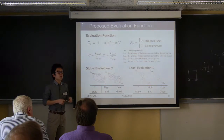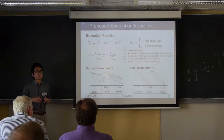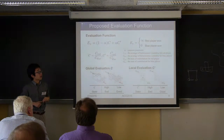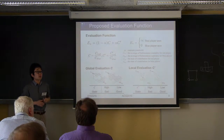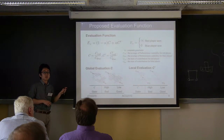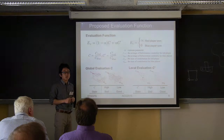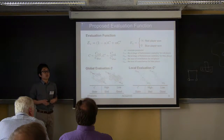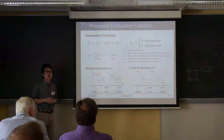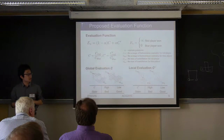Alpha is a constant parameter used to adjust the weight of global and local evaluation. When alpha is zero, it means only global evaluation. When alpha is one, it means only local evaluation. So we change the strategy by changing the value of alpha depending on the board states.